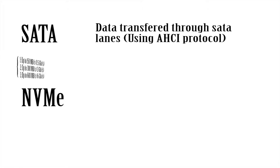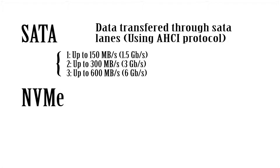SATA 1 is 150 megabytes per second, SATA 2 is 300, and SATA 3 — which is most likely the one you're using now — has speeds of up to 600 megabytes per second, or as you might see it, 6 gigabits per second. A bit and a byte are different units, so these are just different unit transfers.